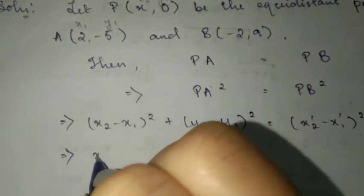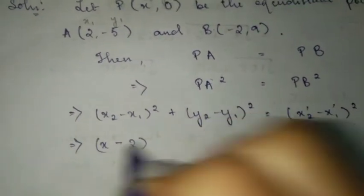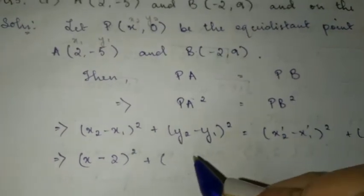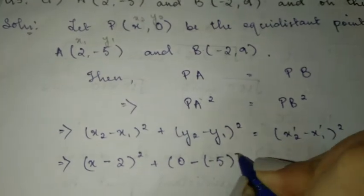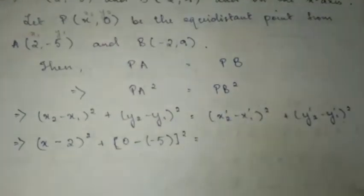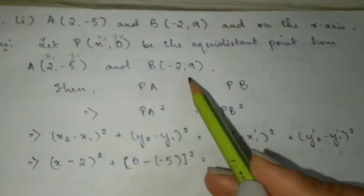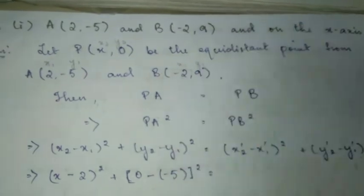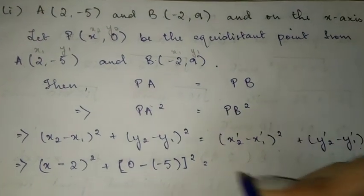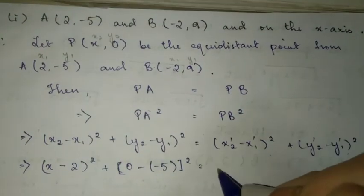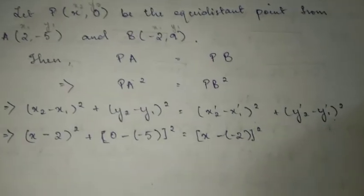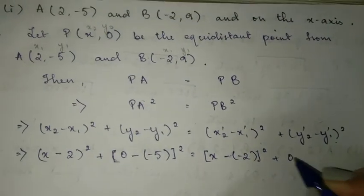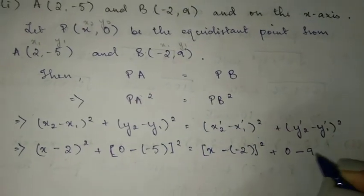So x2 is x, x1 is 2, so (x - 2) whole square plus y2 is 0, y1 is -5, so minus -5 which is plus 5 whole square. This is the first question which I'm doing it like this so I'm going through all the details.